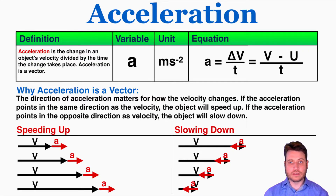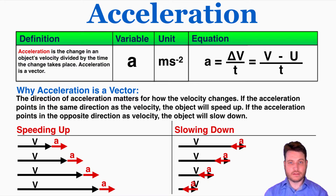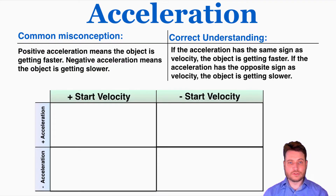This is a really important concept. If acceleration and velocity point in the same direction, the object is getting faster. If they point in opposite directions, the object is slowing down — and vice versa. A common misconception is that positive acceleration means the object is getting faster and negative acceleration means it's getting slower. But this is not true at all.